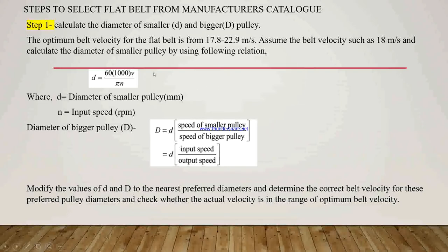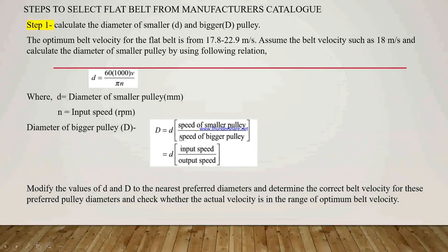To calculate the diameter of smaller pulley, we use the following relation: d is equal to 60 into 1000 into velocity divided by pi times n. Here d is the diameter of smaller pulley in mm and n is the input speed in rpm. After calculating the value of small d, we have to calculate the diameter for the bigger pulley, capital D. To calculate capital D, we use the relation: capital D is equal to small d into input speed divided by output speed.